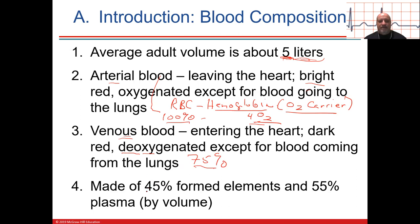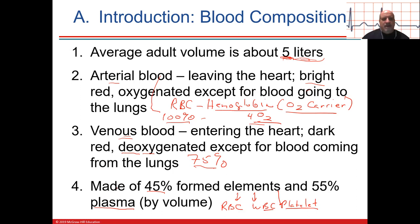Blood is made of 45% formed elements. A red blood cell is called an erythrocyte, a white blood cell is a leukocyte, and a platelet is a thrombocyte — 'thrombo' meaning clot. The other 55% is plasma. In the plasma you have dissolved solutes like ions, chemical messengers like hormones, waste, and a lot of water — probably 80% water. That's its own fluid compartment inside the vessels.